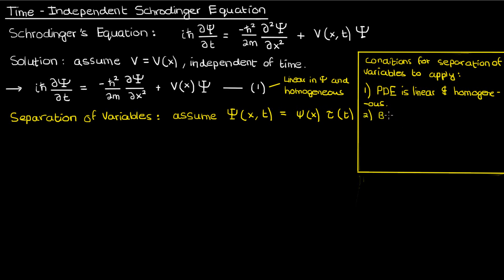The other condition of separation of variables is that the boundary conditions on this PDE are also linear and homogeneous, but we don't really have boundary conditions, not yet at least, so how can we use separation of variables? Are we just guessing that our boundary conditions will be linear and homogeneous a priori? Well kind of.